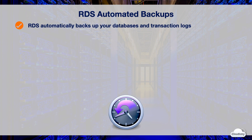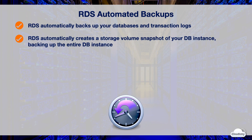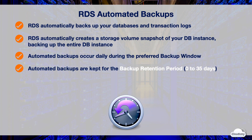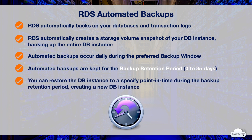Automated backups are turned on by default. RDS automatically backs up your databases and transaction logs, and creates a storage volume snapshot of your DB instance, backing up the entire DB instance and not just individual databases. Automated backups occur daily during a configurable 30-minute backup window, and are kept for the backup retention period that you've defined. You can set the backup retention period to between 0 and 35 days. You can restore the DB instance to a specific point in time during the backup retention period, creating a new DB instance.